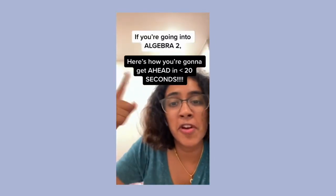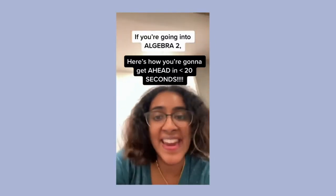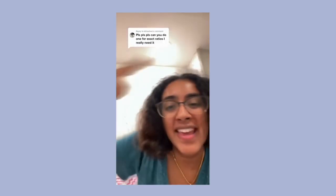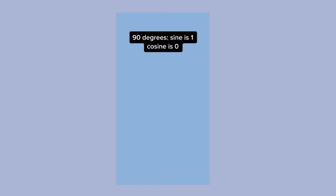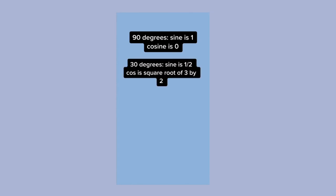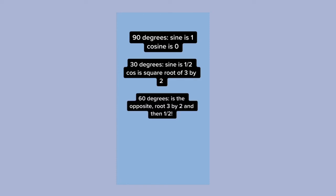If you're going into Algebra 2, here's how you're going to get ahead in less than 20 seconds. Today's topic: exact ratios. 90-degree angle — sine is 1, cosine is 0. 30-degree angle — sine is 1/2, cosine is √3/2. 60 degrees is the opposite: sine is √3/2, cosine is 1/2. And 45 degrees has sine and cosine both equal to √2/2.